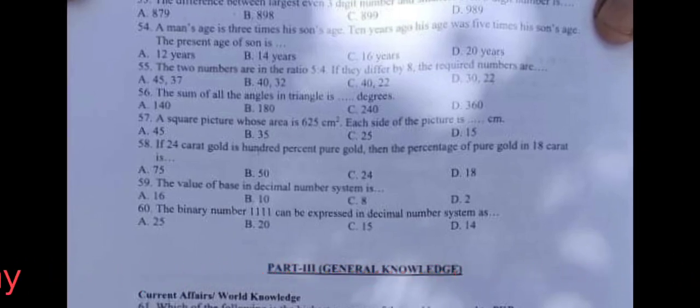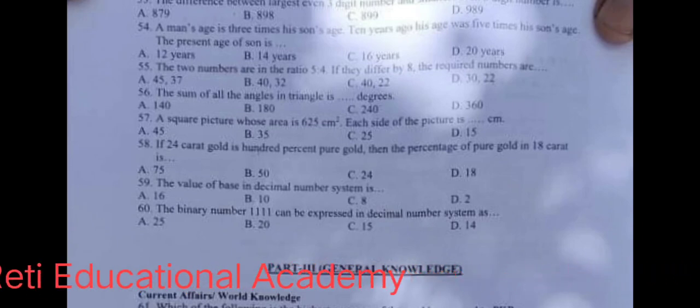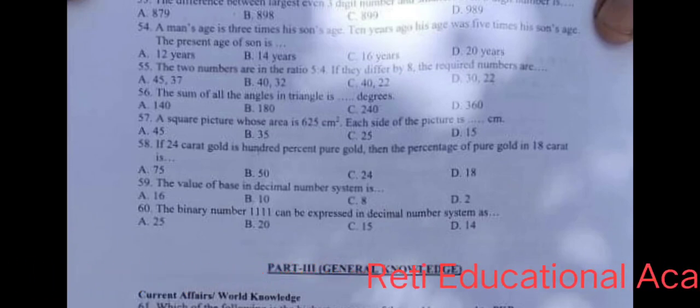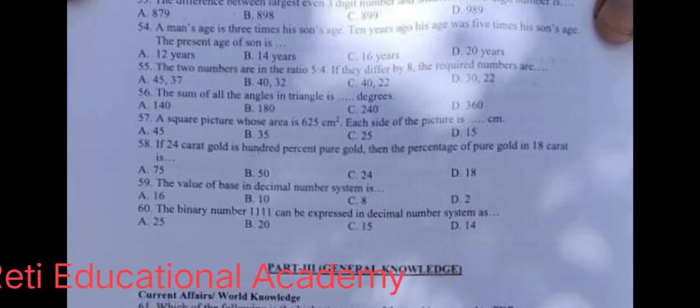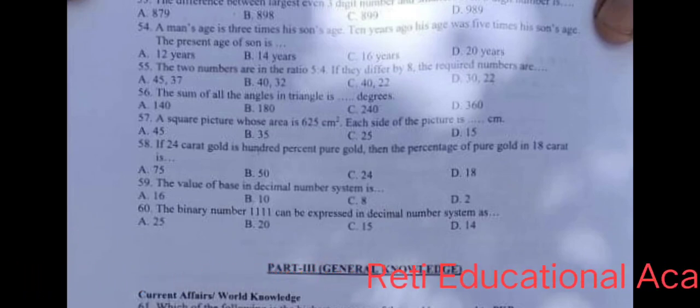Question number 58: If 24 carat gold is 100% pure gold then the percentage of pure gold in 18 carat is, and the correct answer is A, 75%.